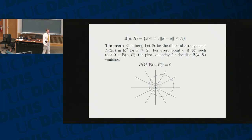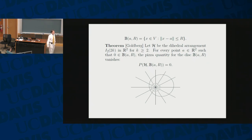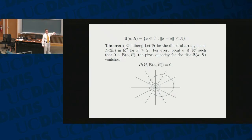The result by Goldberg can be formulated this way: we have the dihedral arrangement with 2k lines, k at least two. Then you pick a disk in the plane containing the origin, and the pizza quantity is equal to zero.